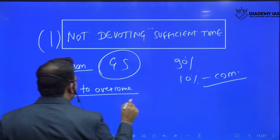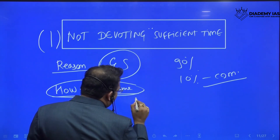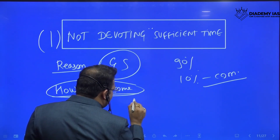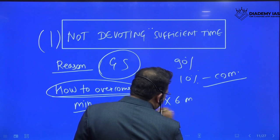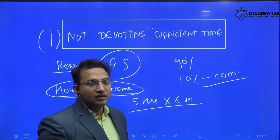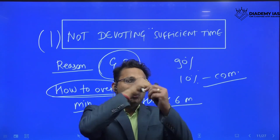I suggest you should give some minimum time to commerce. For example, you should give at least five hours for the next six months to commerce without any break. Five hours is sufficient. You fix five hours. After those five hours, you do anything in GS.